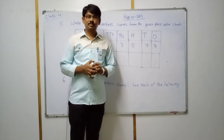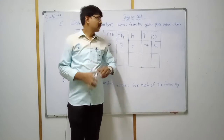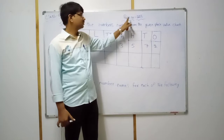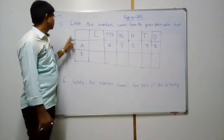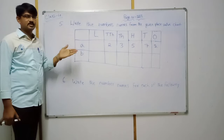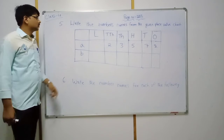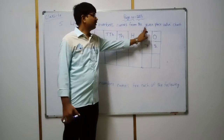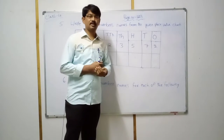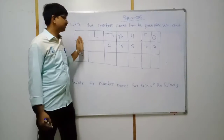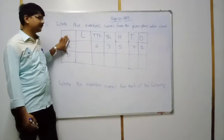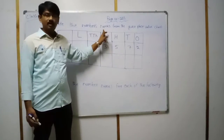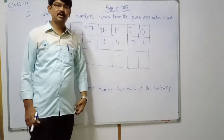Hi students, welcome to mathematics class. Page number 223, question number 5. Already we finished up to the 4th question. Now write the numbers and names from the given place value chart. The 4th question was making the place value chart. Here we need to write the number names.